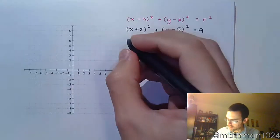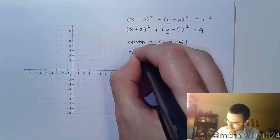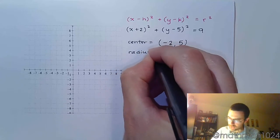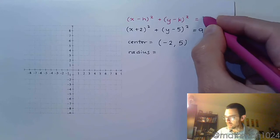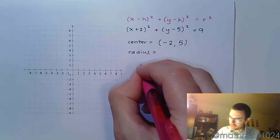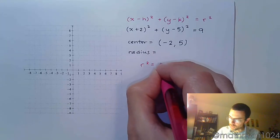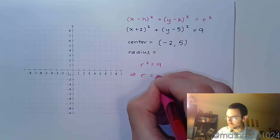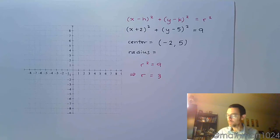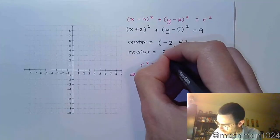For the radius, we look to the constant that's on the right side. But you need to understand how this works out. r squared is 9. So if r squared is 9, that then means that your radius is 3 when you take the square root. So the radius is 3.